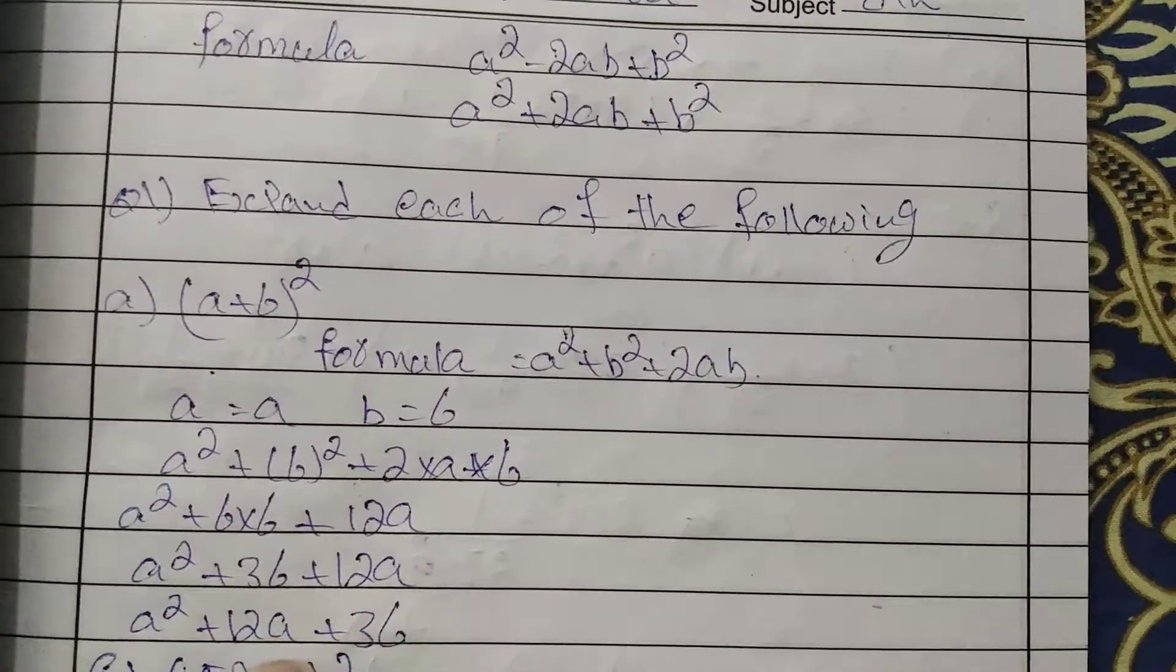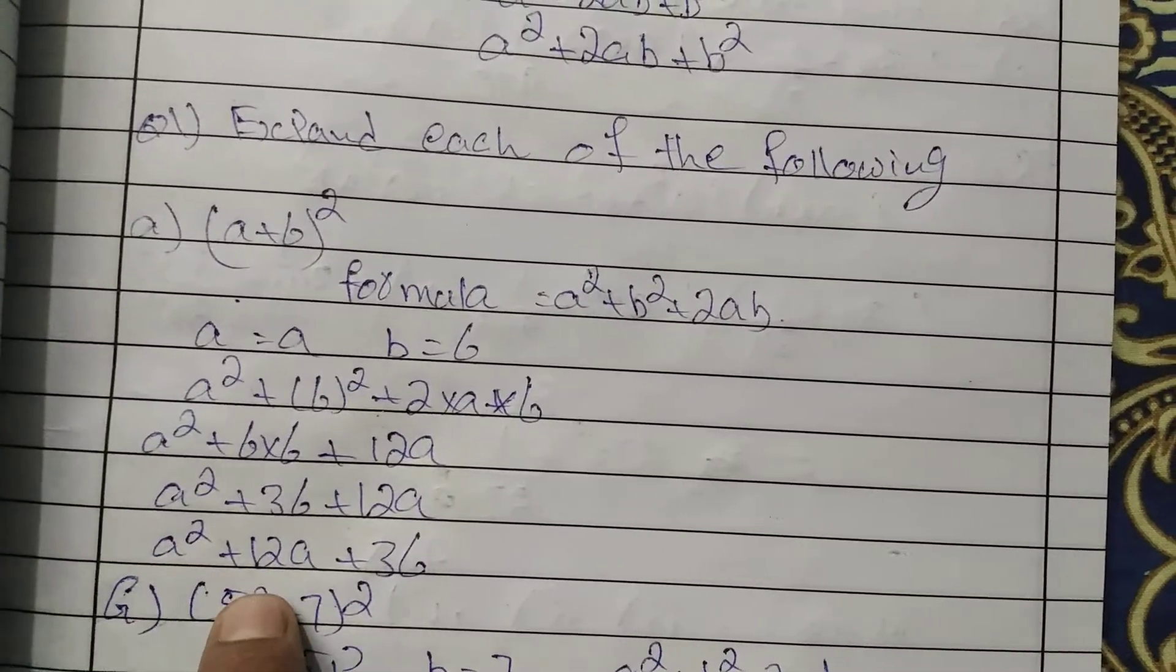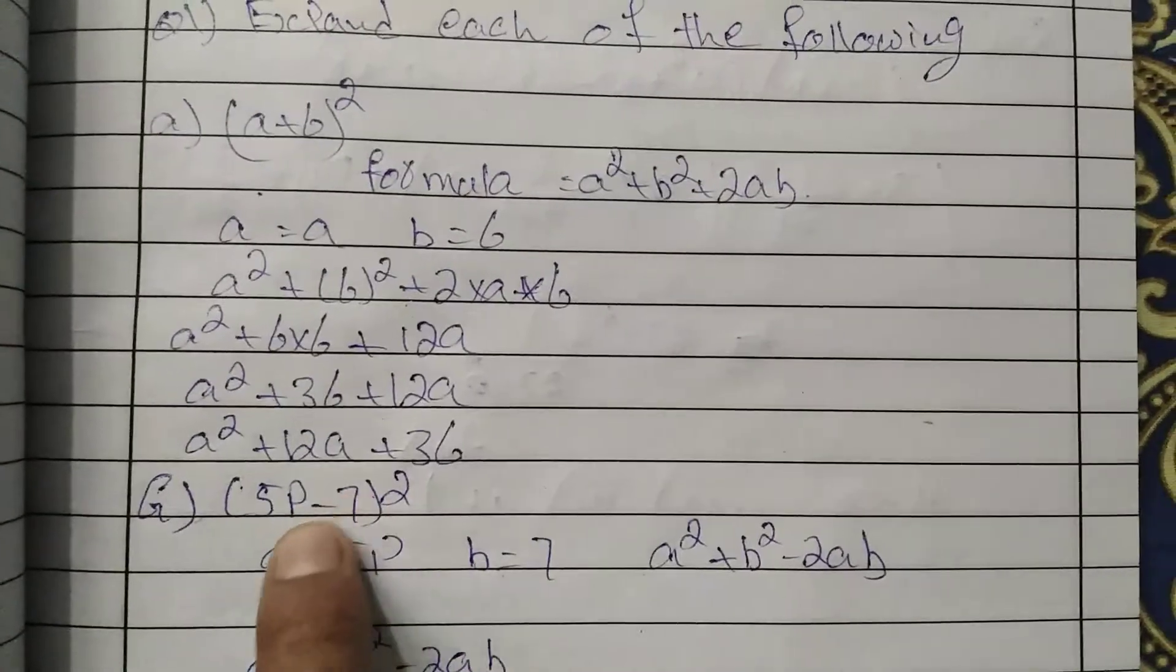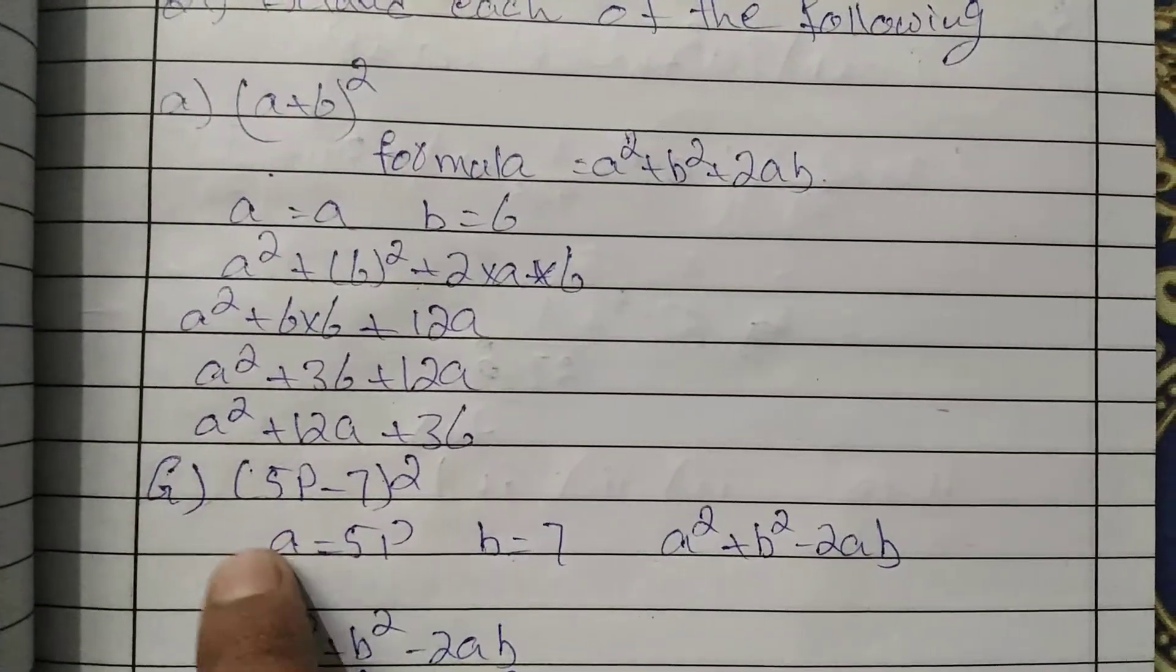So 36 plus 12a. We write it as a² + 12a + 36. In the second part, a equals 5p.